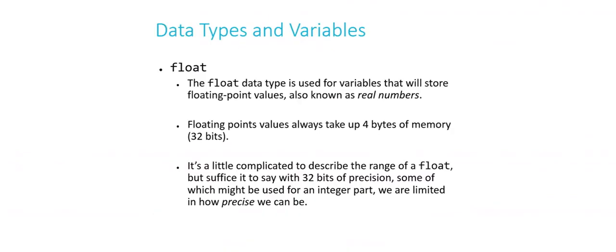The next major data type is floating point numbers. So floating point numbers are also known as real numbers. They are basically numbers that have a decimal point in them. Floating point values, like integers, also contain within four bytes of memory.